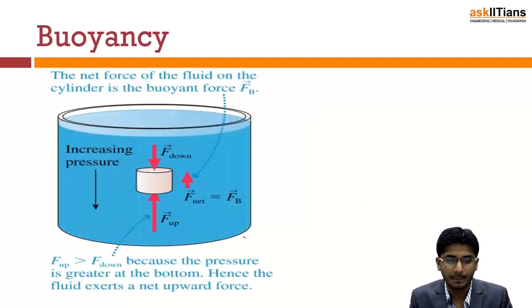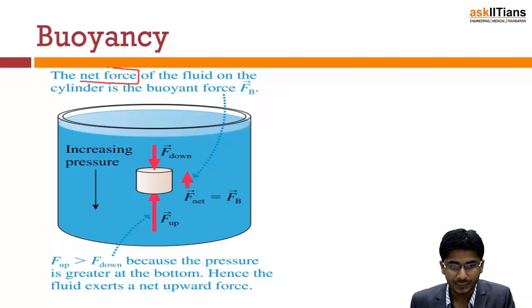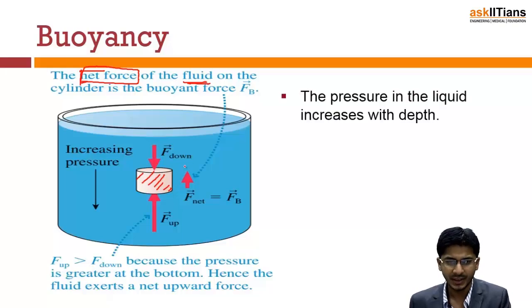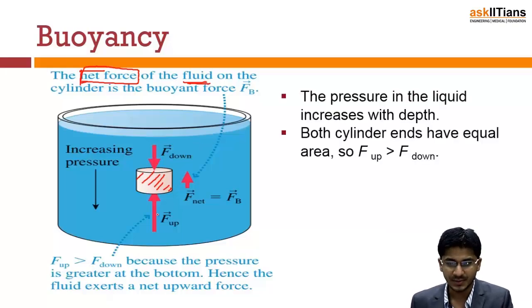What exactly is buoyancy? Buoyancy is the net force of the fluid on the cylinder or any object kept within the fluid. It is simply the net force that is exerted by the fluid on the object - here it is the cylinder. Now where does this net force come from? As we know, the pressure increases with depth.